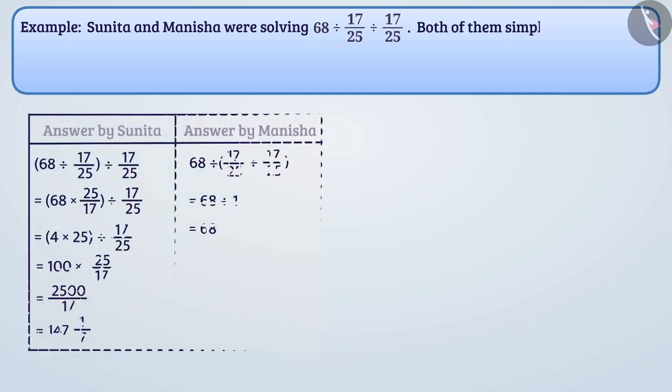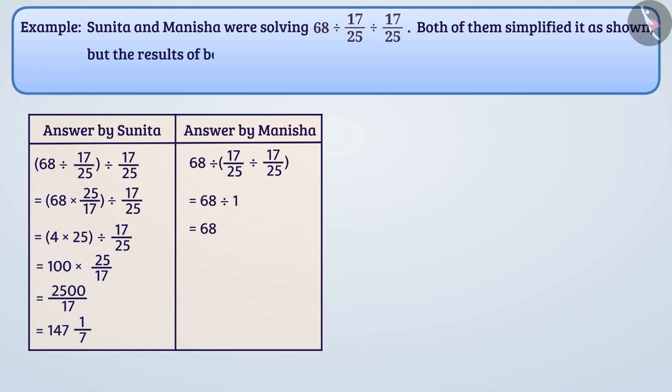Both of them simplified it as shown but the results of both came differently. Can you tell whose answer is correct and why?